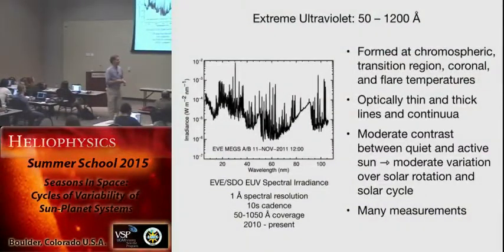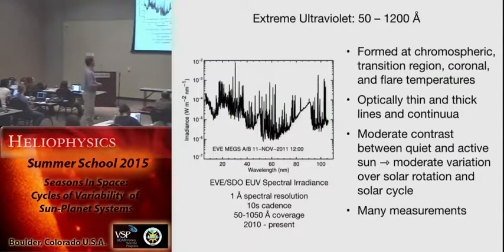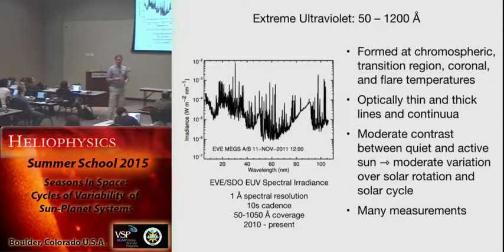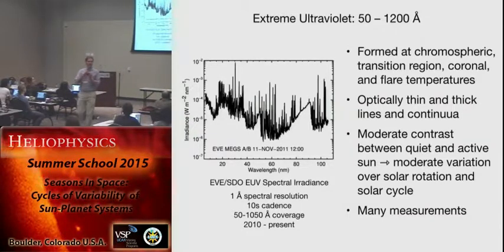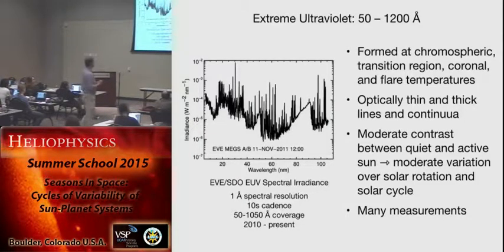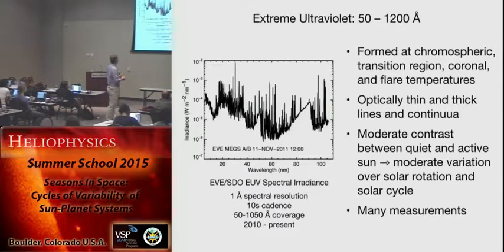Let's go up a little bit in wavelength to the extreme ultraviolet. This is a really interesting wavelength range — we have the full gamut of chromospheric, transition region, coronal, and even flare emission. It starts around 50 angstroms and goes up to about 1200 angstroms. This emission is both optically thin and optically thick — by optically thick I mean the photon interacts with other atoms along the way, making everything complicated and requiring radiative transfer. There's a moderate contrast between quiet and active sun because emission here is formed at more or less lower temperatures, leading to more moderate variation over solar rotation and solar cycle timescales.